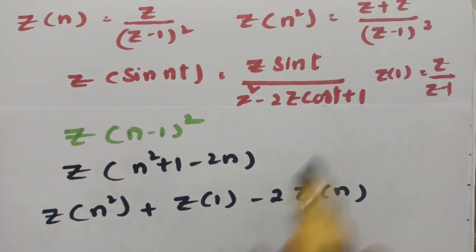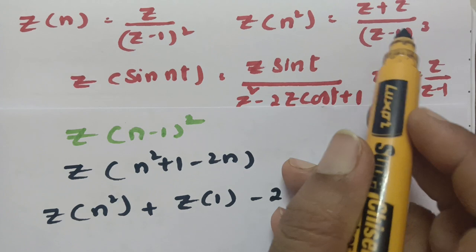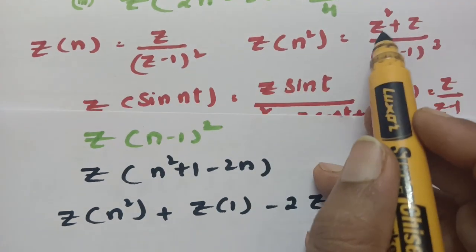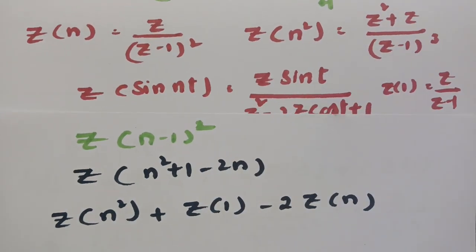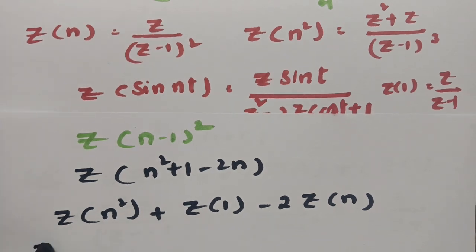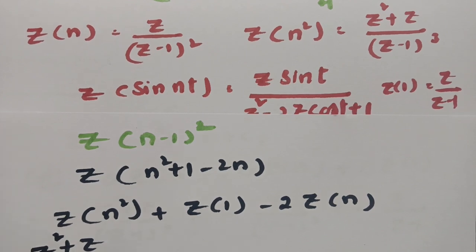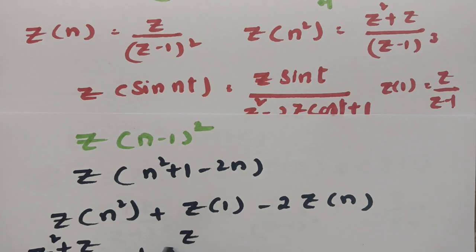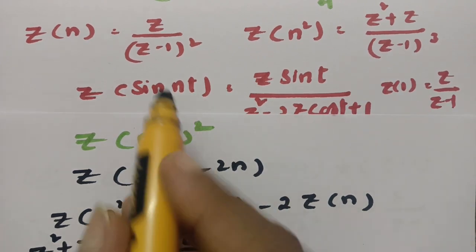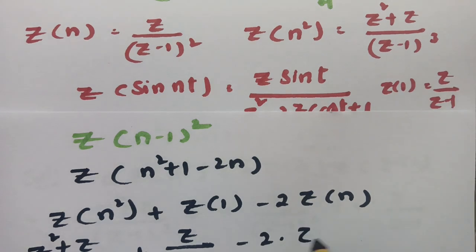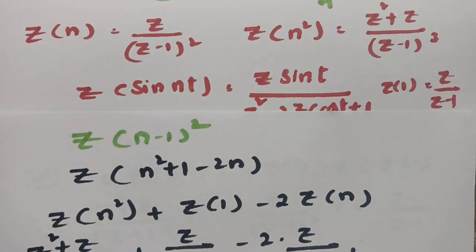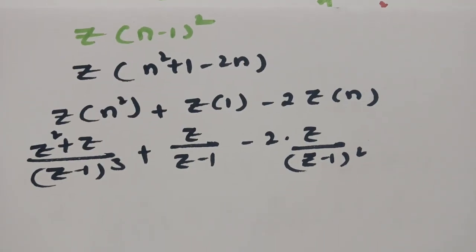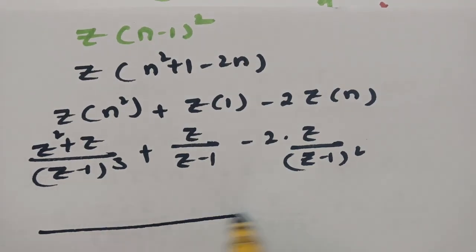Z{n²} = (Z² + Z)/(Z−1)³, Z{1} = Z/(Z−1), and 2·Z{n} = 2Z/(Z−1)². Substituting all formulas and taking the LCM of (Z−1)³, we can then simplify the combined expression.